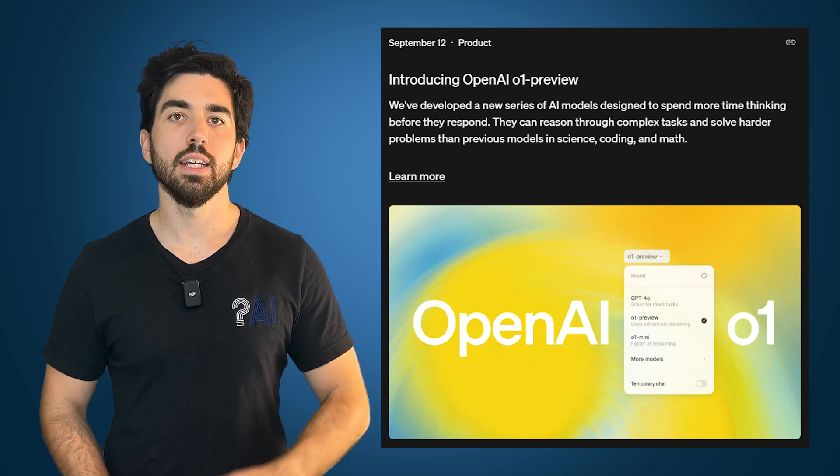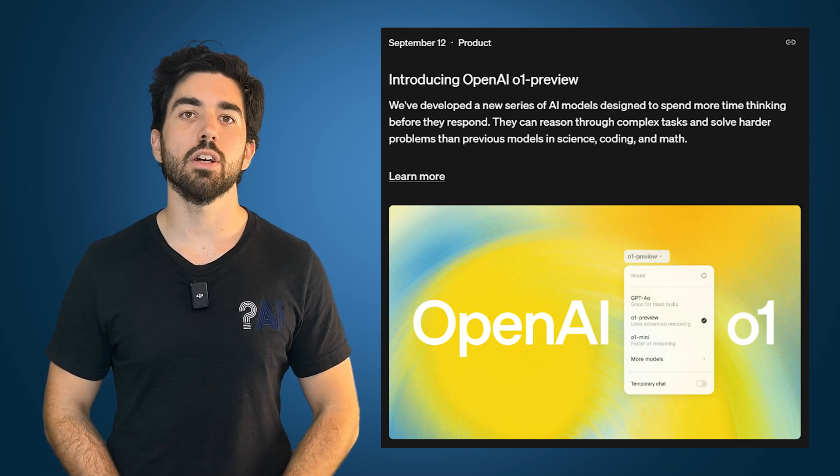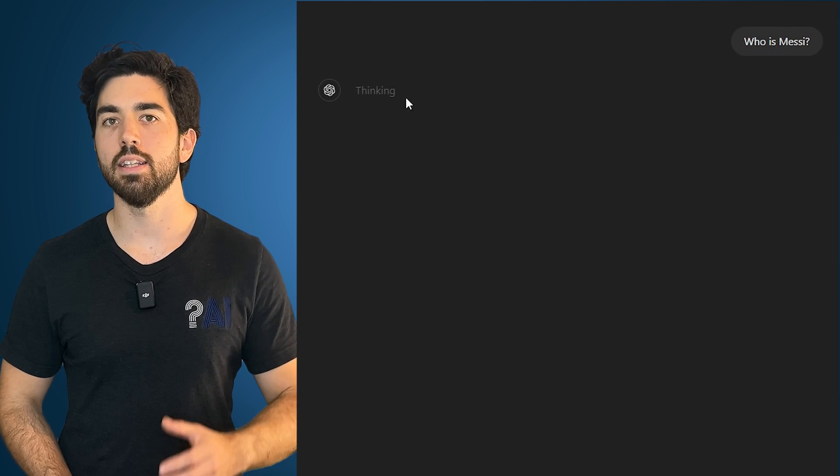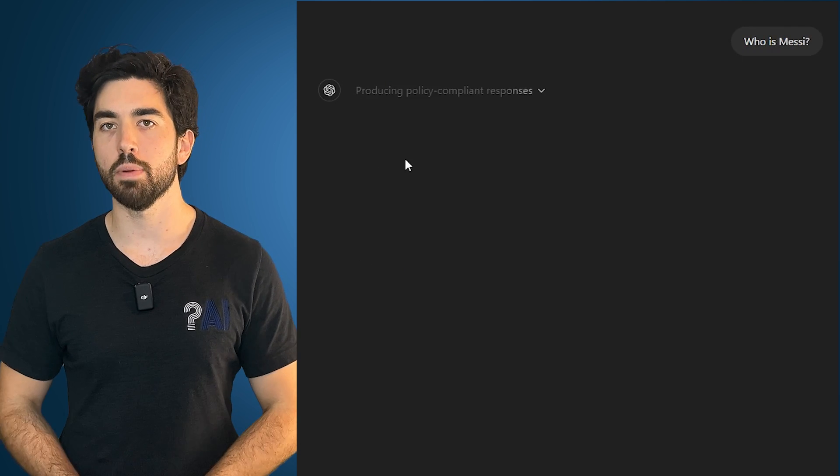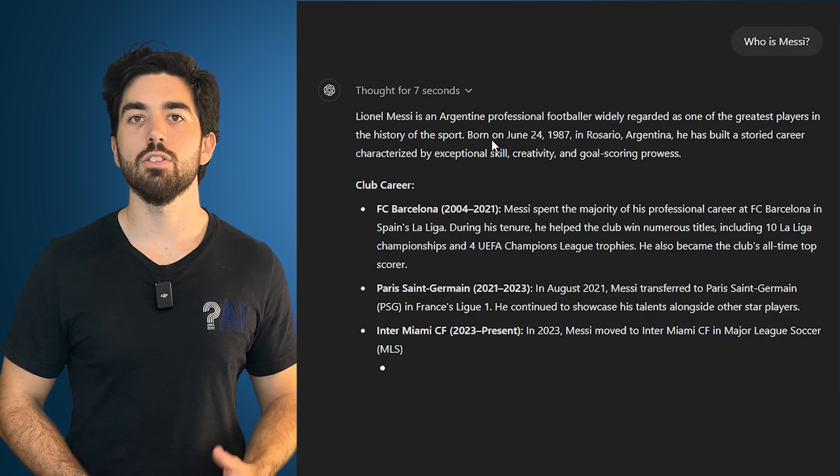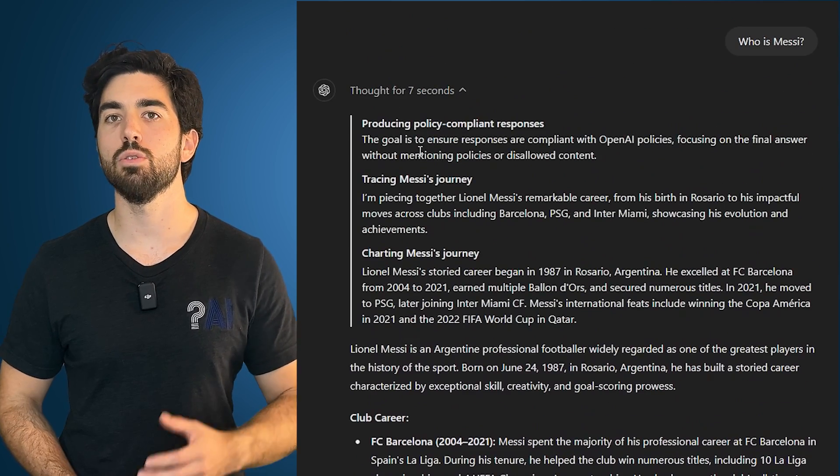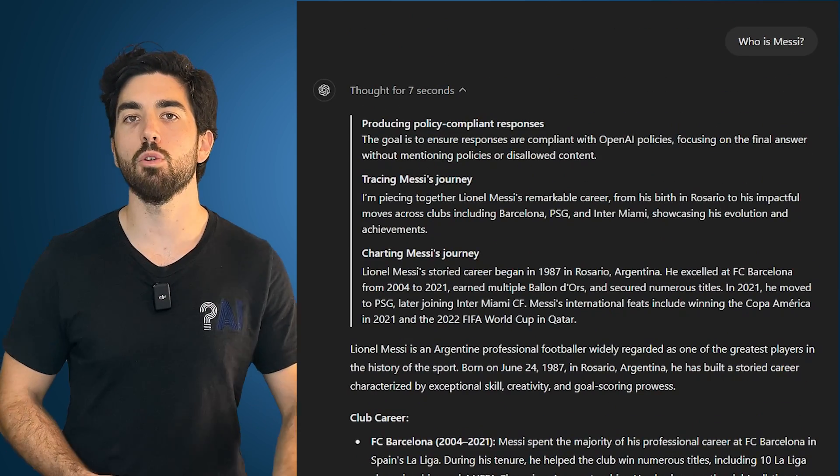OpenAI O1's model is their latest iteration focused on advanced reasoning and chain-of-thought processing. Unlike previous models like GPT-4O or GPT-4, O1 is specifically designed to think before responding, meaning it doesn't just generate text but goes through multiple steps of reasoning to solve complex problems before responding.